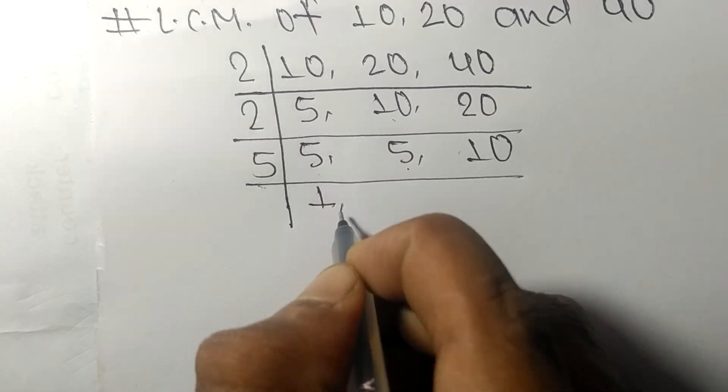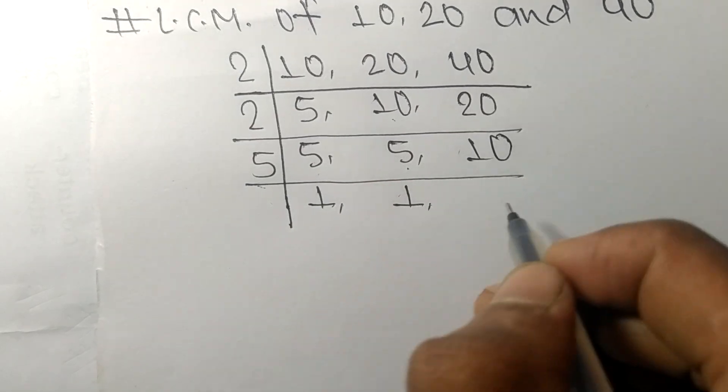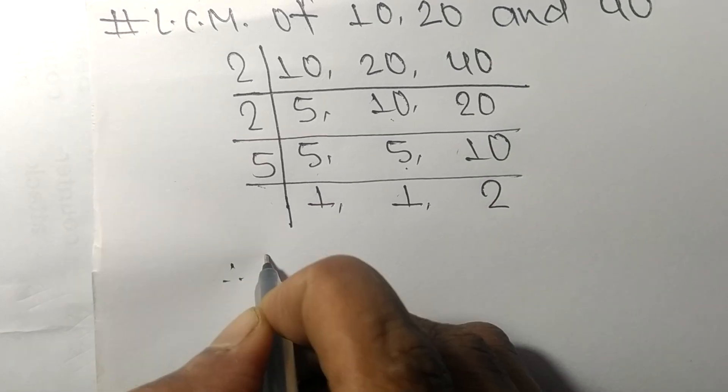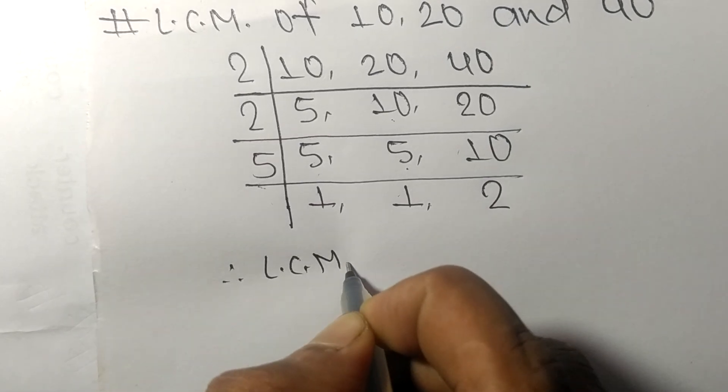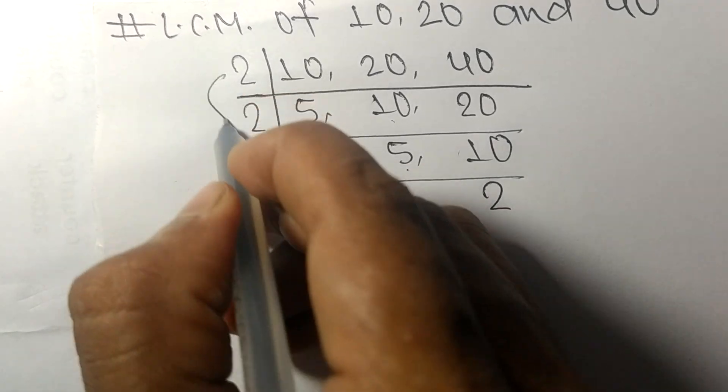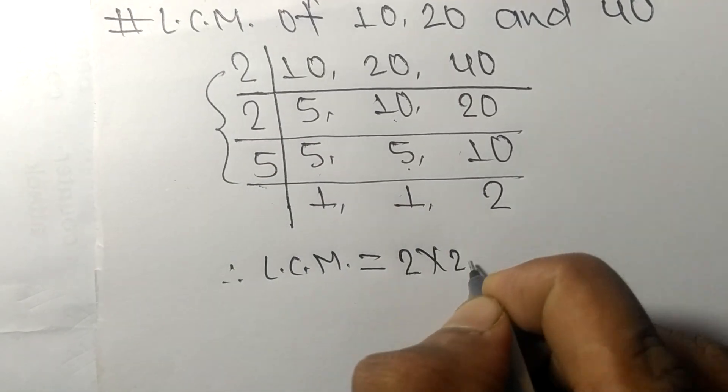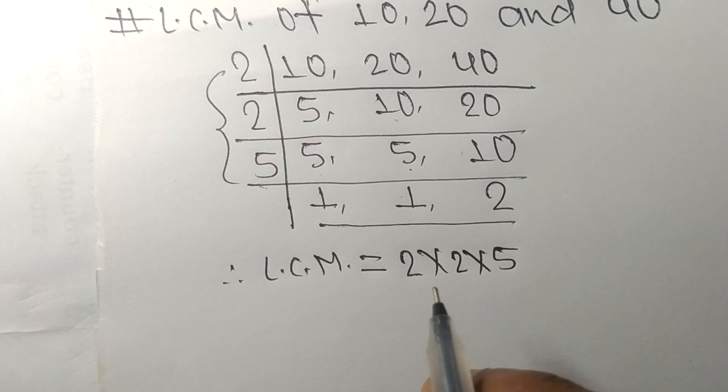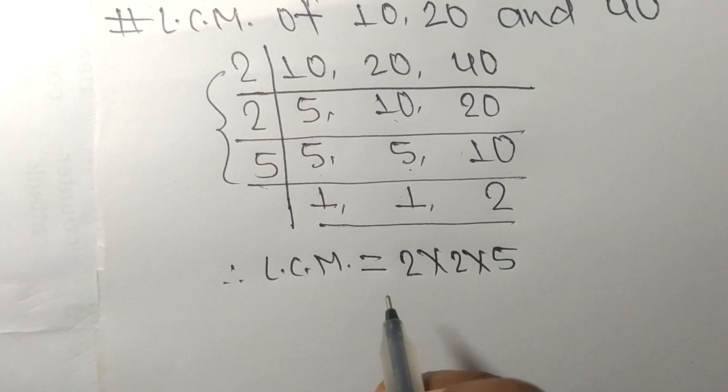5 times 1 means 5, 5 times 1 means 5, 5 times 2 means 10. So the LCM is equal to, from this side it is 2, 2, and 5. From this side we choose the numbers greater than 1, that is 2.